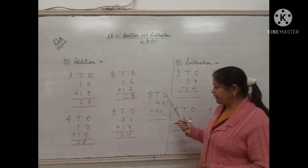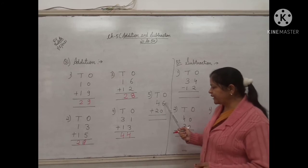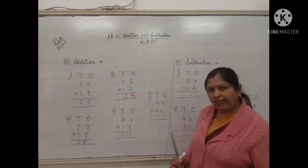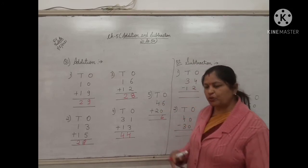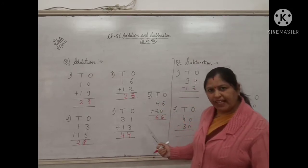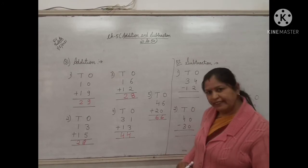Now the last one. In the ones digit, the number is 6 and 0. 6 plus 0 will be 6. And 4 plus 2 will be 6. So what is the answer children? The answer will be 66.